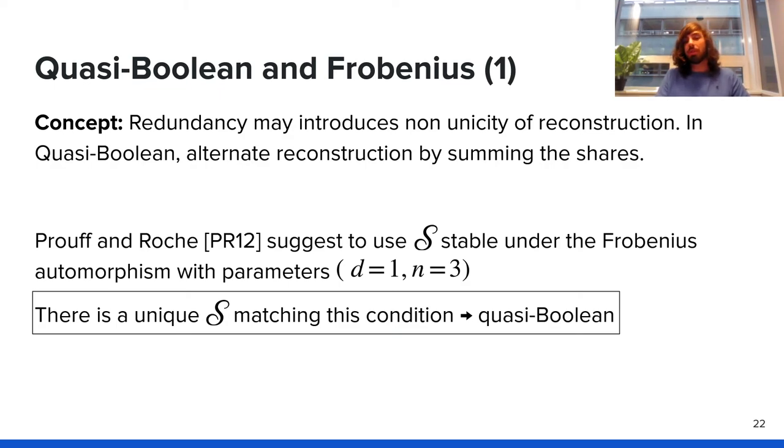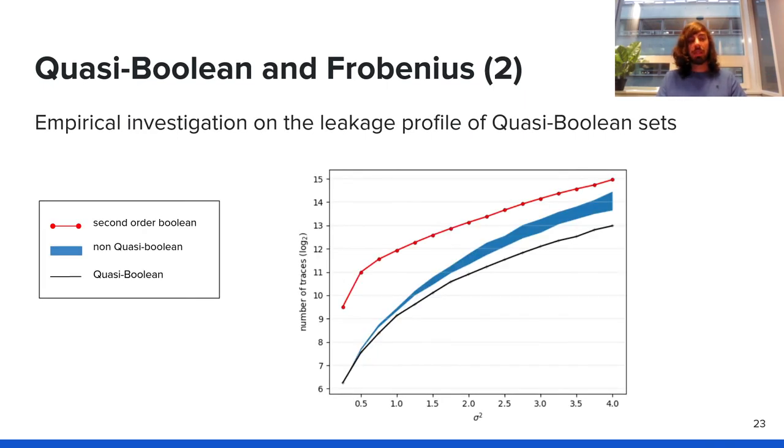The last question left to answer is: are those quasi-Boolean sets of points leaking more as we thought? We did hamming weight experiments again. On this graph, you have the red curve that shows you the second-order Boolean, which is shown here as an indication. In the blue area, you have where all the non-quasi-Boolean sets of points that we investigated fall. We did not investigate all the possible points, so it's possible that some points are a bit outside this zone. The quasi-Boolean one is in black and is much lower than the blue one. As expected, it has a much weaker leakage profile than the blue one, and it should be avoided.